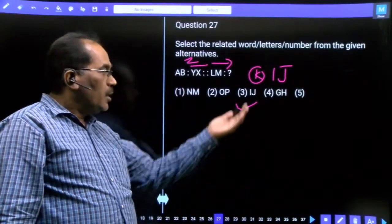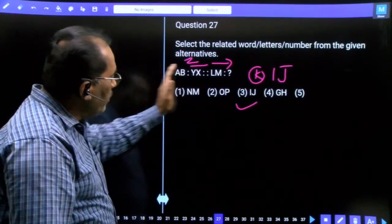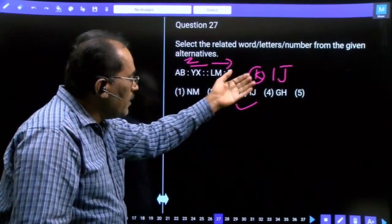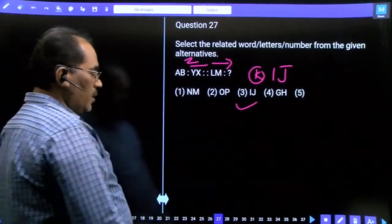Question number 27, this is a letter analogy. The answer is the third option, 4.